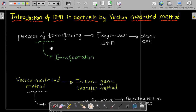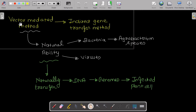In this video we are going to discuss the introduction of DNA in plant cells by vector-mediated method. The process of transferring exogenous DNA into a plant cell is known as transformation. This vector-mediated method is also known as the indirect gene transfer method.